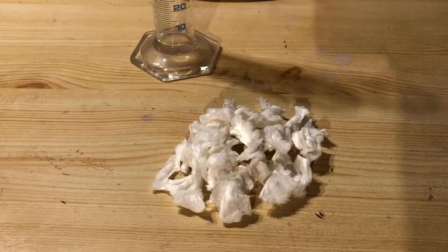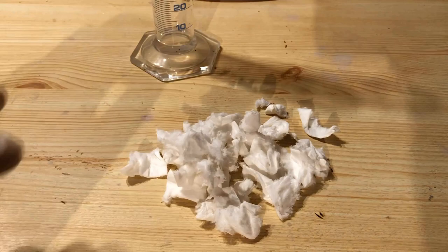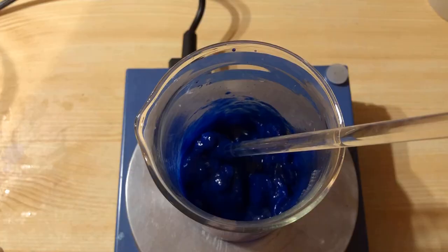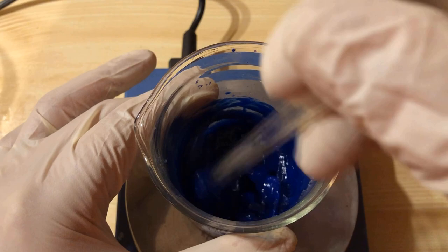Meanwhile, some cellulose is plucked. I use medical swabs that are made of 100% cellulose. The cellulose is then added to the solution. A thick slurry is formed, which is stirred with a glass rod until a homogeneous mass is obtained.